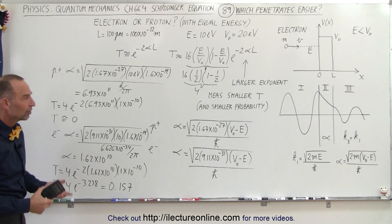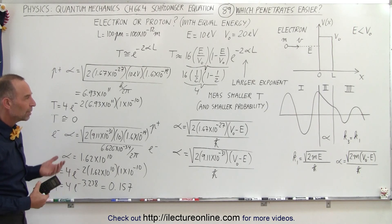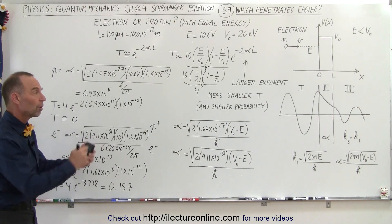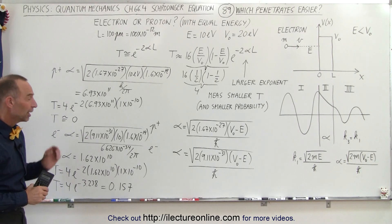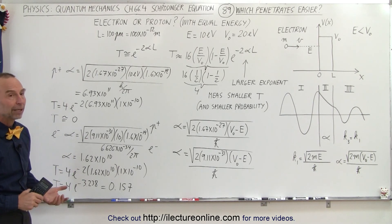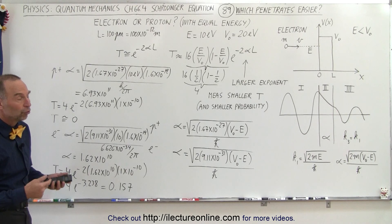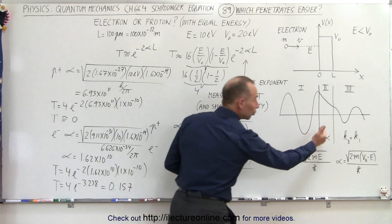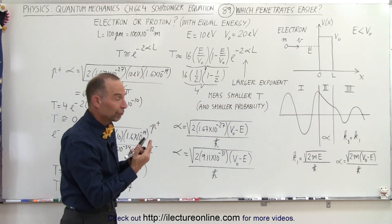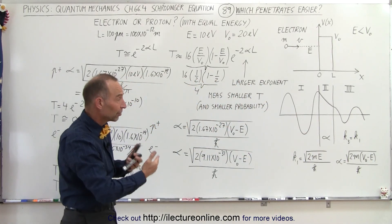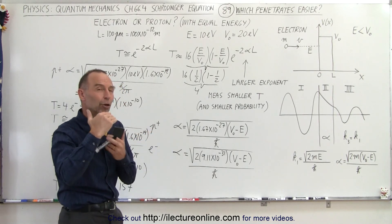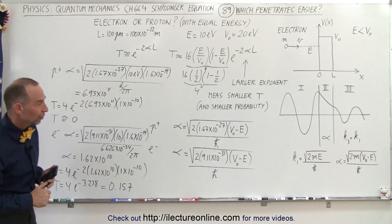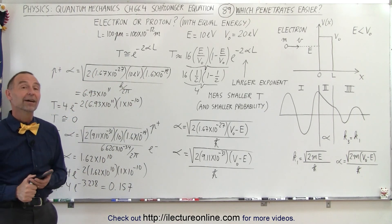This is a good example showing the difference between protons and electrons. When particles become relatively large, there's a much smaller probability they'll make it through a barrier; when particles are very small, there's a much greater probability. This explains nuclear decay: particles like alpha particles or beta particles must make it through a potential barrier in the nucleus and need to have sufficient energy to do so. We'll show examples of how that works in the next few videos.